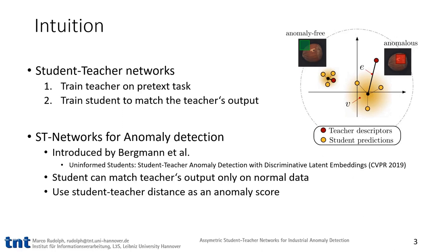Our work is based on student-teacher networks. First, the student is trained on a pretext task. After that, one or several students are trained to match the teacher's output. This helps for anomaly detection, as a student can match the teacher's output well on normal data, but hardly on anomalies, since it has been trained only on normal data. Past work makes use of this mechanism by utilizing the student-teacher distance as an anomaly score.